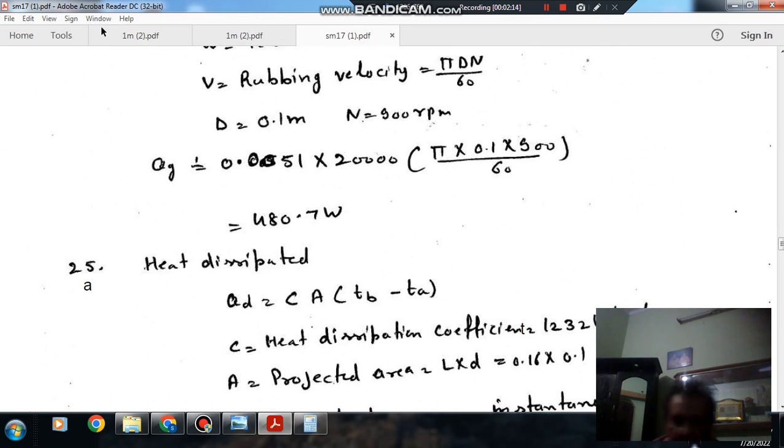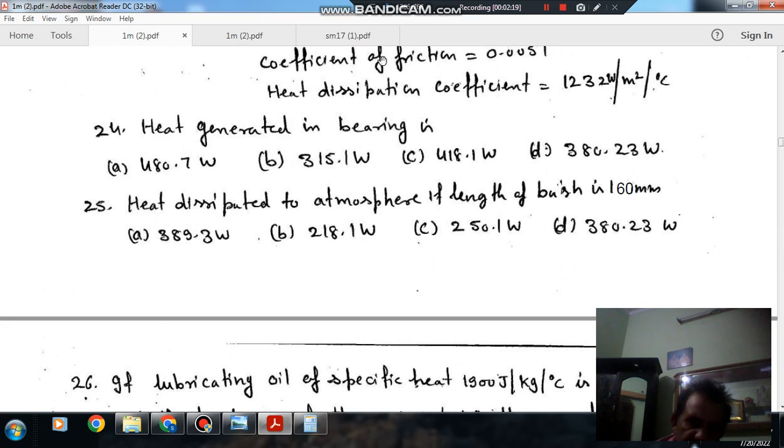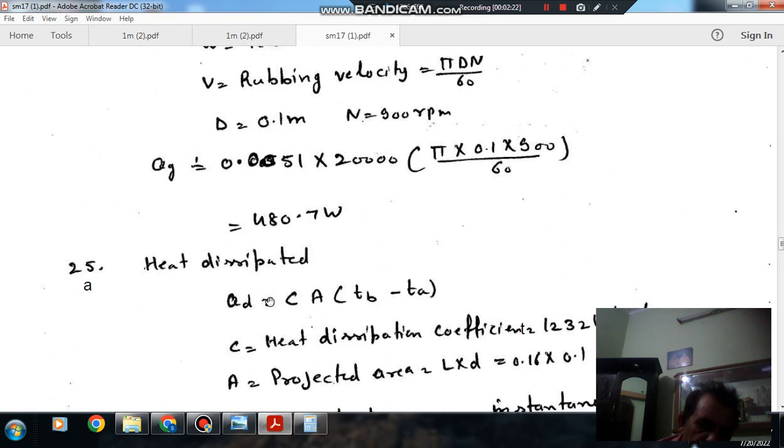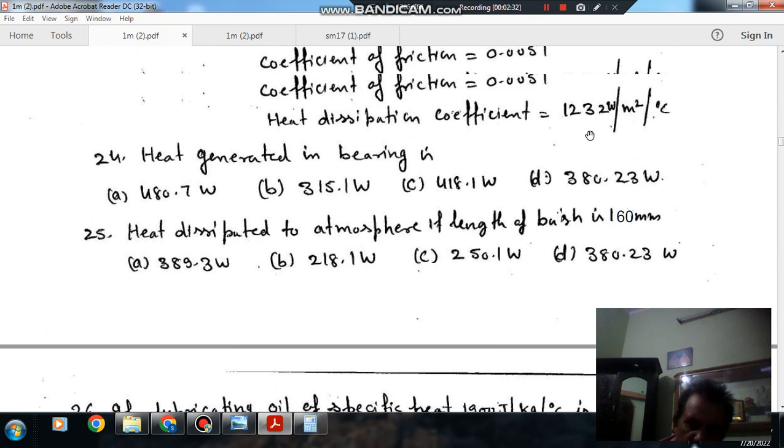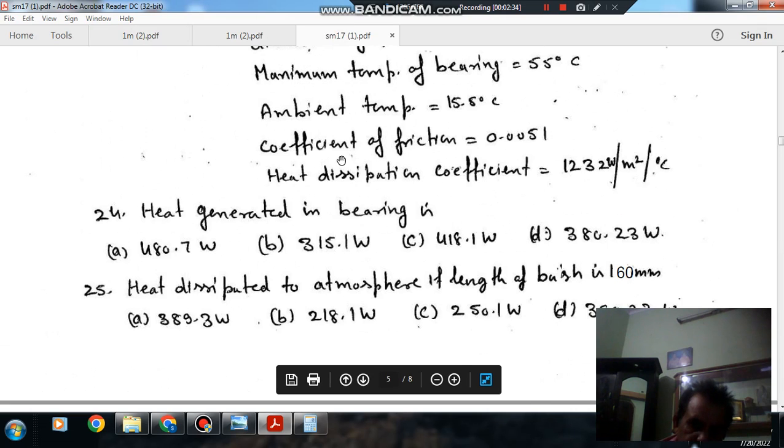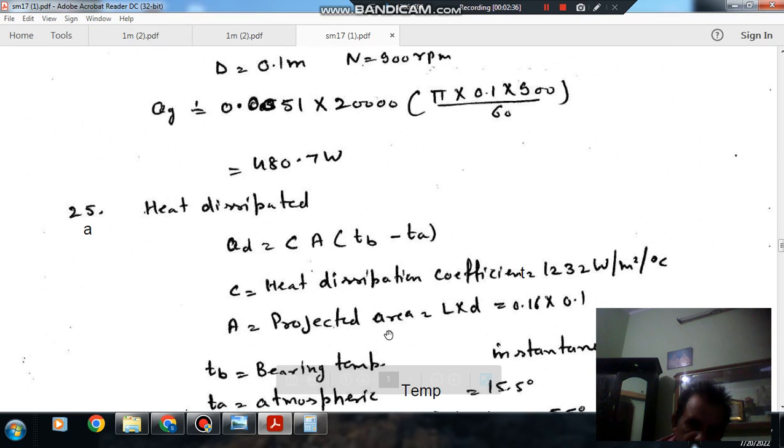Now to calculate the heat dissipated, second question is we have to find out the heat dissipated at most of the lambda portion 161. So to calculate heat dissipated we have that formula that is C into A into TB minus TA. Here C is heat dissipated coefficient that is 1232 Watt per m squared per degree Celsius. And A is projected area because length is given as 161 and diameter is given as 100 mm. So projected area is 0.16 into 0.1.